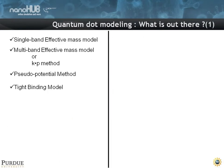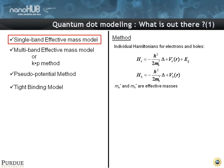So let's look at what's out there. Certainly there are single band effective mass models and these k.p models, which are basically effective mass. You can write down these individual Hamiltonians for each band, and each band is described by an effective mass.